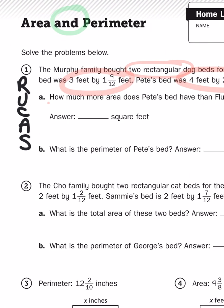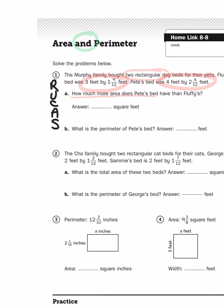How much more area does Pete have than Fluffy? So we are comparing areas. That means we have three things to do: find the area for Fluffy's bed, find the area for Pete's bed, and then subtract the difference.